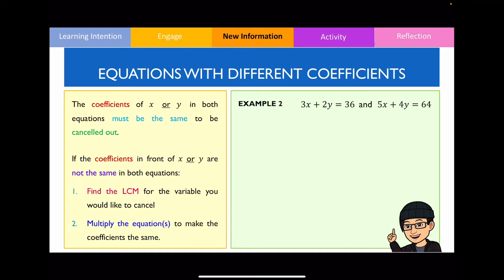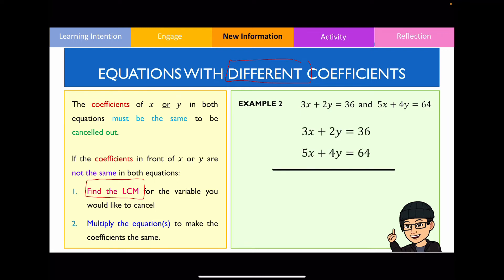Let's go through another example. This one is different because now you've got different coefficients, and I want to show you how we can still solve it. When the coefficients of x and y are not the same, we need to make them the same. The way we do that is to first find the lowest common multiple for the letter you want to cancel, then multiply the equations to make the coefficients equal. I've written the equations in the format used for the elimination method.